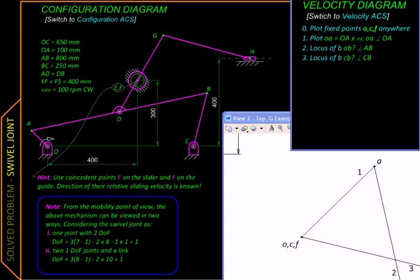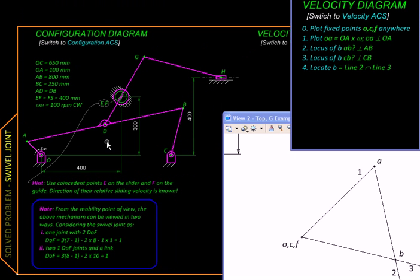The image of point d can be obtained by transferring the ratio in which it divides this link a b to the velocity image a b over here, like this.